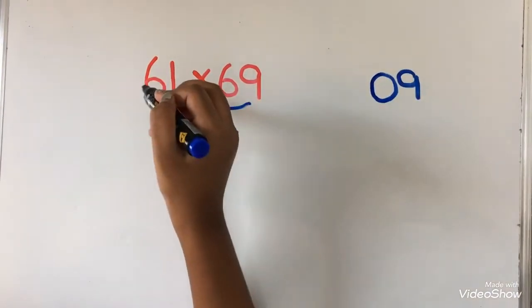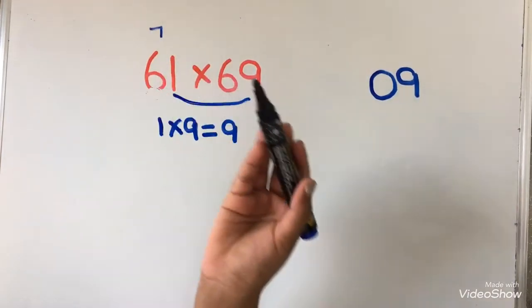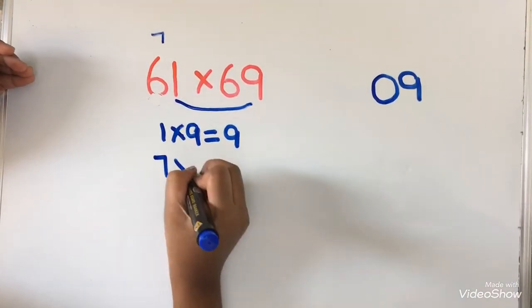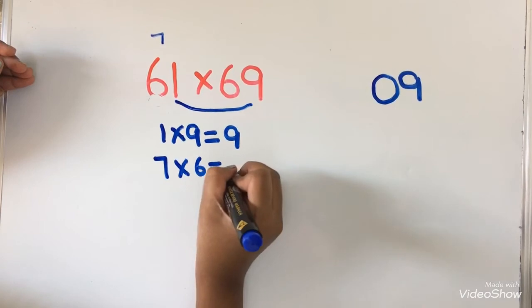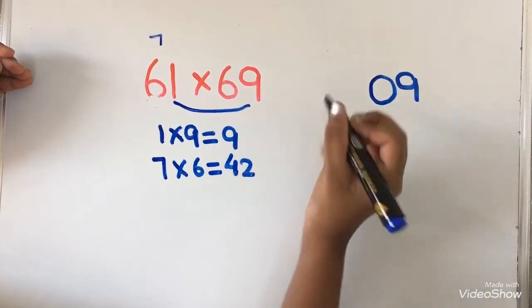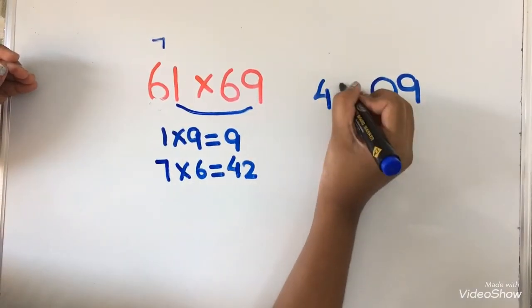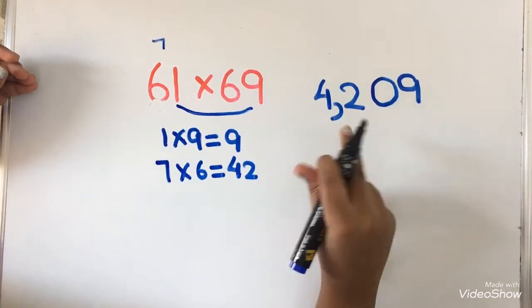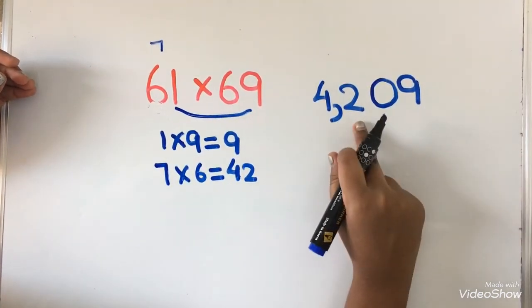Now after 6, the number is 7. So 7 into 6 equals 42. I am going to write 42 over here. The answer is 4,209.